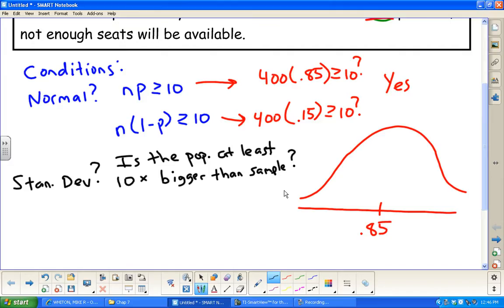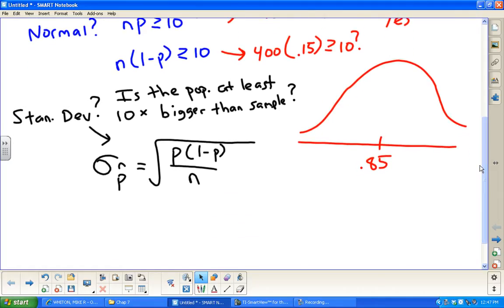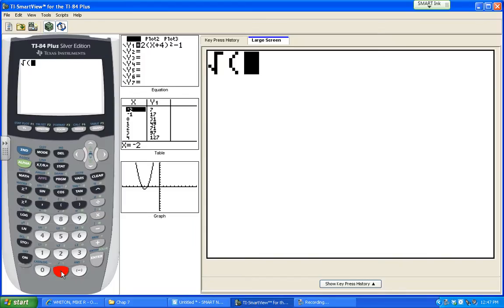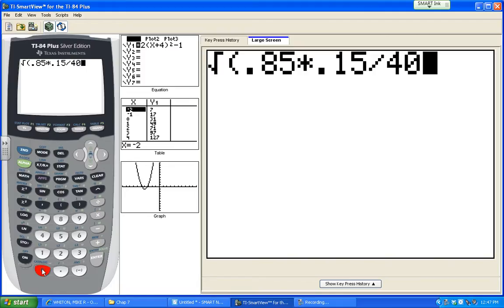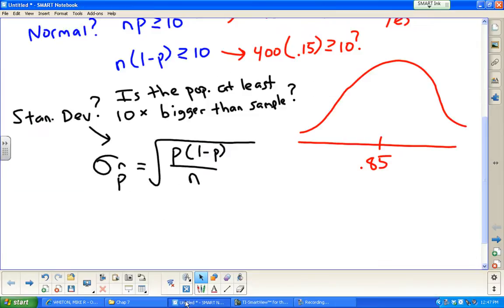So what we're going to do, we have the formula for that standard deviation of the p-hats, the sample proportions. The formula is the square root of p times 1 minus p all over n. We're going to throw that in the calculator. We know p is 0.85, we know n is 400. I'm going to go square root, p times 1 minus p, divided by n. Notice the whole thing is in parentheses because we're taking the square root of the whole thing. That's going to give us our standard deviation, 0.018.